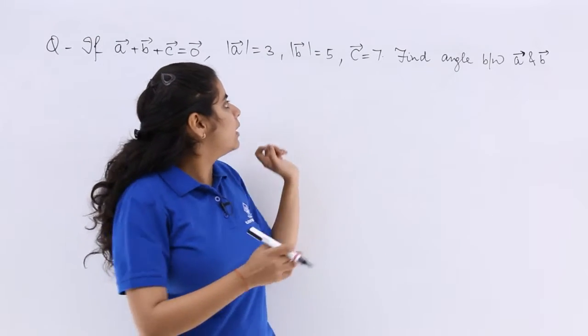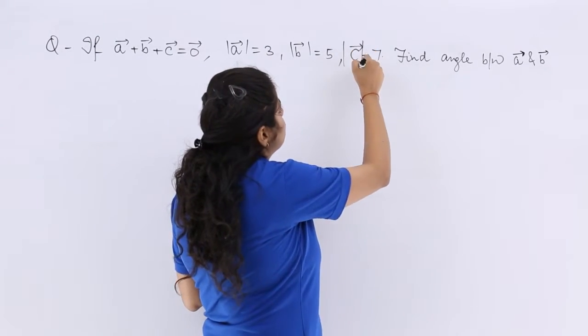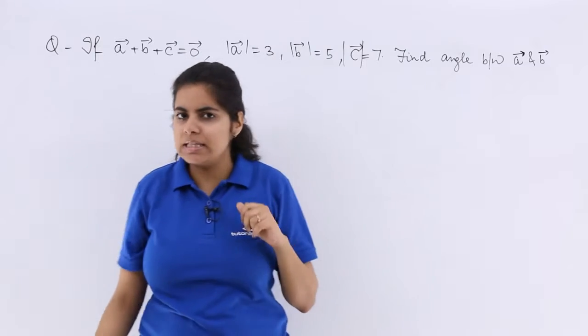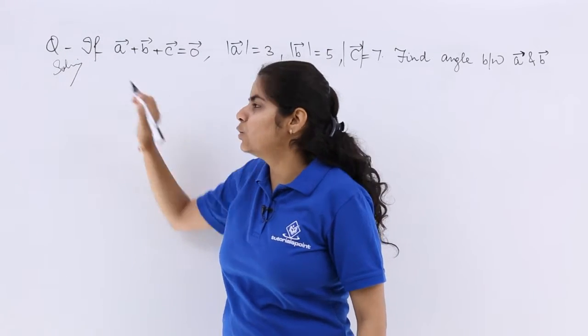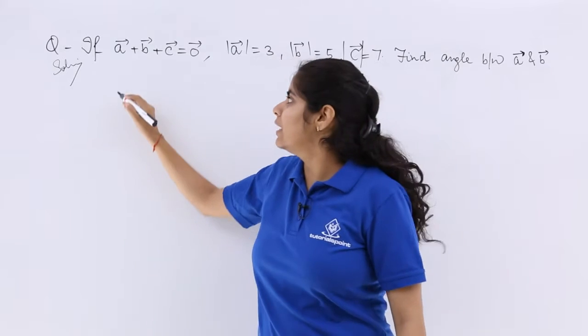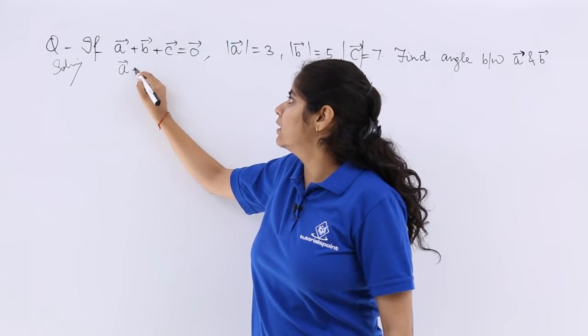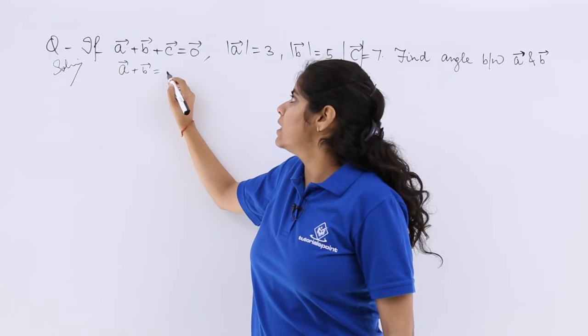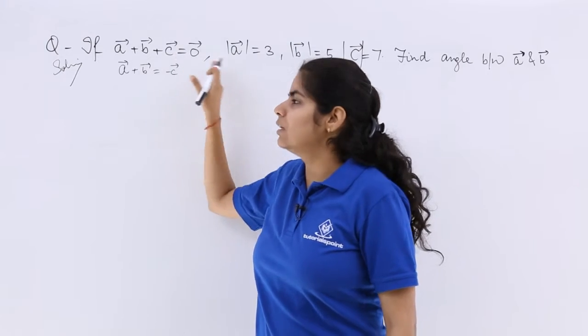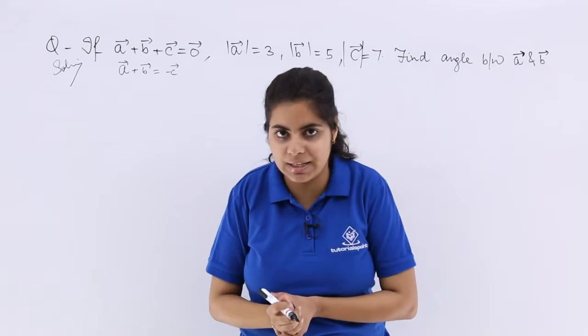So it is magnitude of A, magnitude of B, and this should be magnitude of C. Let's see how we should be doing it. I write solution and I know one thing that we have been given A vector plus B vector is equal to minus C vector, because if plus C is equal to 0, we can take C to the other side.